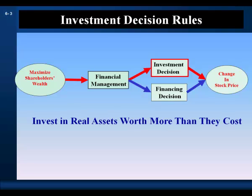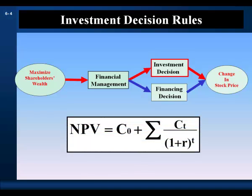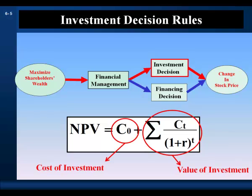The investment decision must be consistent with the goal of the firm. Basically, the firm increases shareholders' wealth by investing in real assets worth more than they cost. In discounted cash flow valuation, investments in real assets worth more than they cost have net present values greater than zero. Net present value compares the value of the investment to its cost. The difference between the value of an investment and its cost is its impact on wealth. Consequently, net present value is an absolute measure of the monetary impact of an investment on wealth.